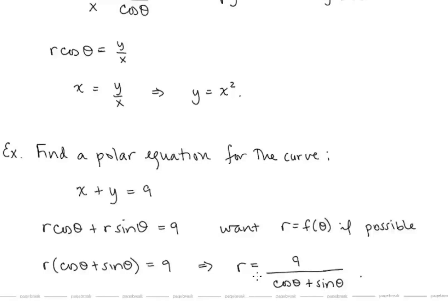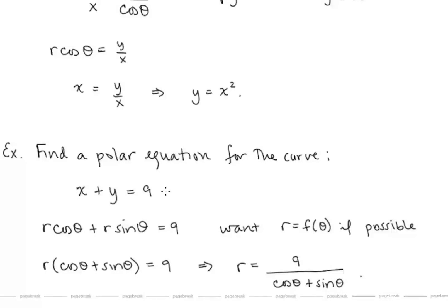Now let's find a polar equation for the Cartesian equation x plus y equals 9. We substitute x equals r cosine theta and y equals r sine theta, giving r cosine theta plus r sine theta equals 9. We prefer the form r equals f of theta, so we factor out r and divide: r equals 9 over (cosine theta plus sine theta). This line x plus y equals 9 can be represented in polar coordinates this way.